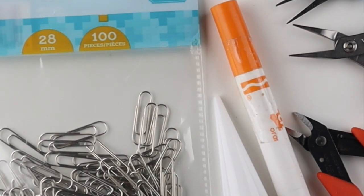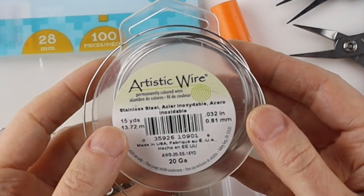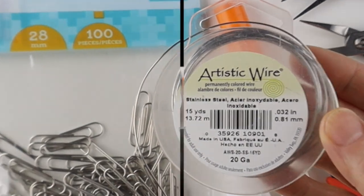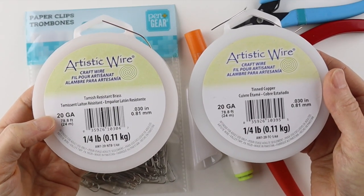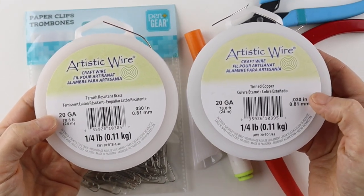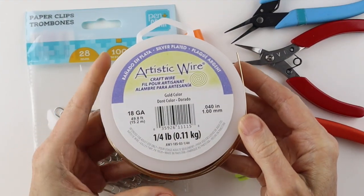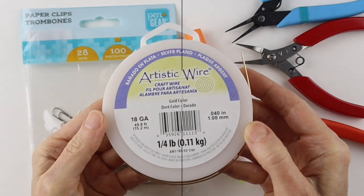If you don't have paperclips, the best thing to use is stainless steel wire. This is 20 gauge. It's quite stiff, just like the paperclips. You can use 20 gauge tarnish resistant brass, tinned copper, or any half hard wire. And if you only have a softer wire, use a little thicker, like 18 gauge.